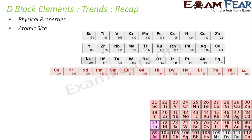Lanthanide contraction refers to a greater than expected decrease in size for elements from atomic number 57 to 71. There is a greater than expected decrease in size because of the poor shielding effect of the f orbitals.